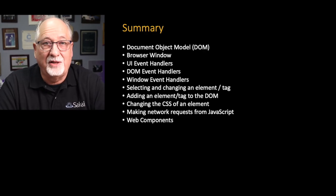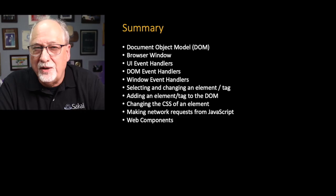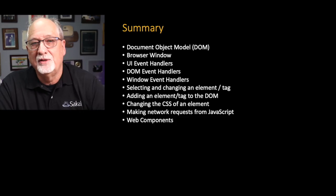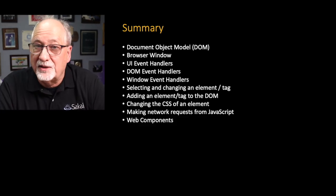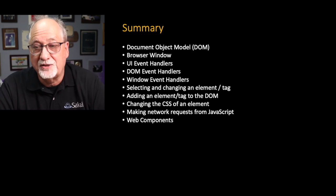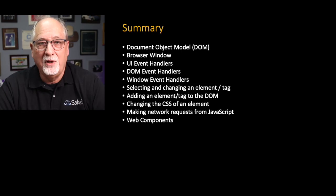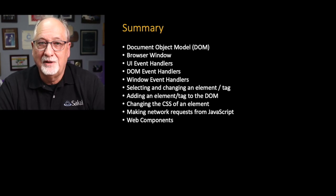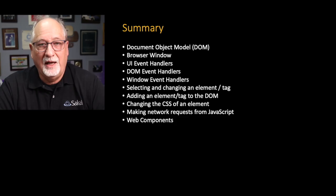In this section we talked about JavaScript and the browser: the Document Object Model, what the window is, adding handlers, adding DOM event handlers, window event handlers, how to grab and change data in the DOM, how to extend the DOM, how to fiddle with CSS like show and hide, how to use fetch to make network requests, and we finished by making web components. There's a lot to this, and it gets really fun when we start moving model data back and forth between the server and JavaScript.